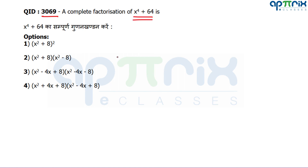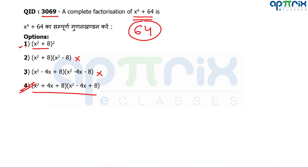Question number 69: What is the total factorization of x⁴ + 64? You can answer in about one second. Options A and D give three terms. But because there is a minus sign in one factor, cancellation occurs and we get two terms. Since we need two terms here, the fourth option is correct. In an objective question, if three options are clearly wrong, the fourth must be right.